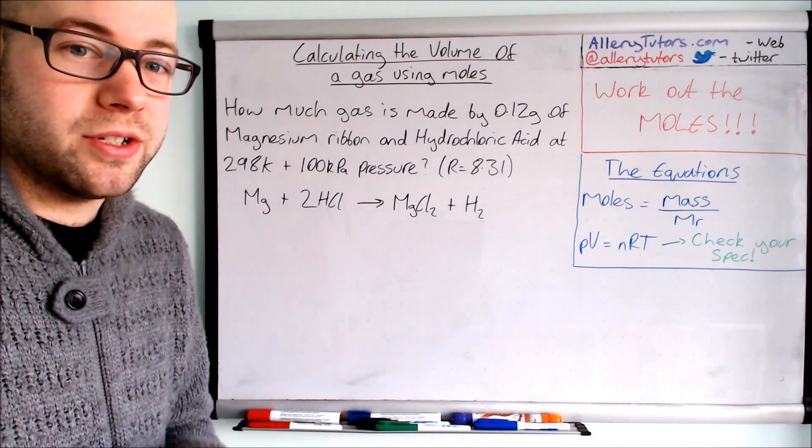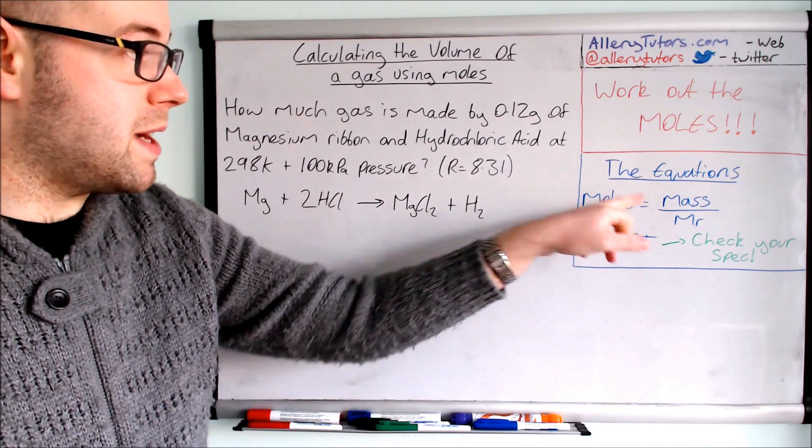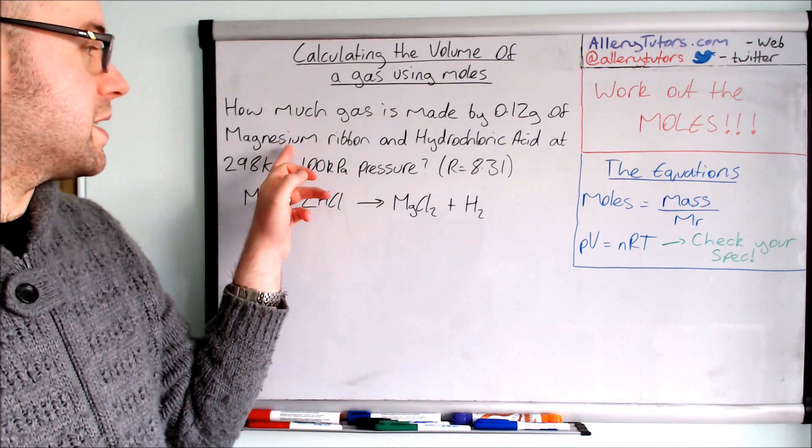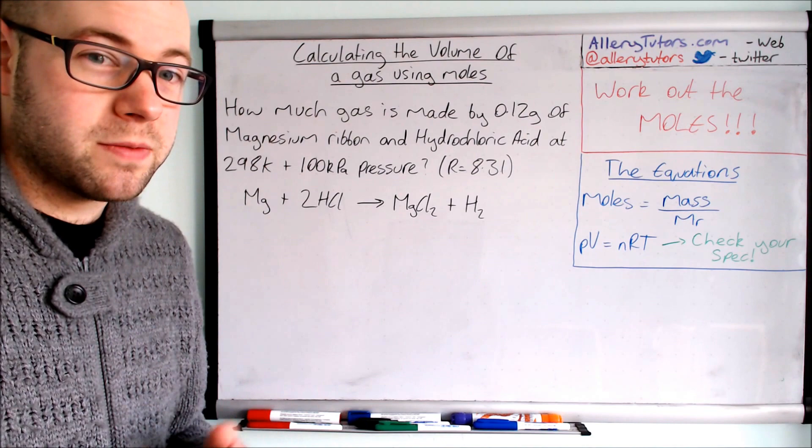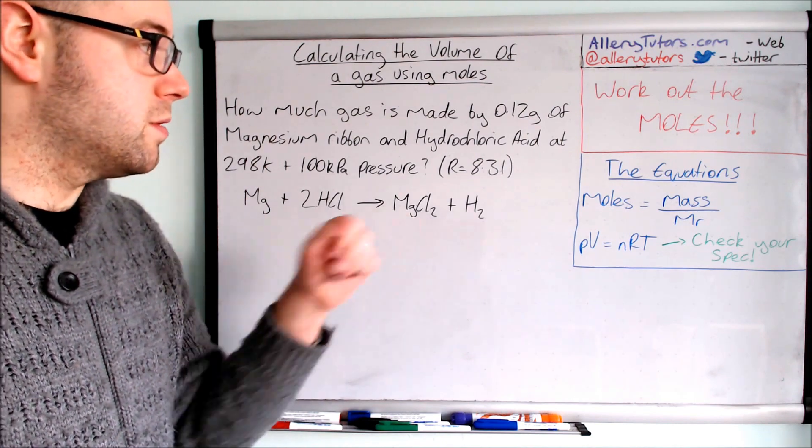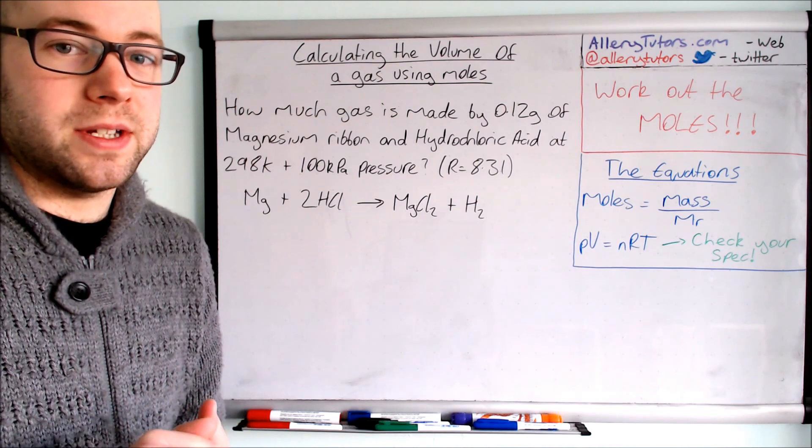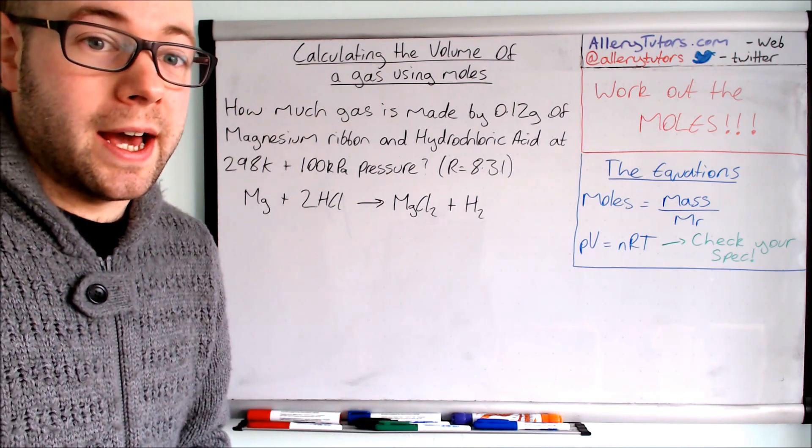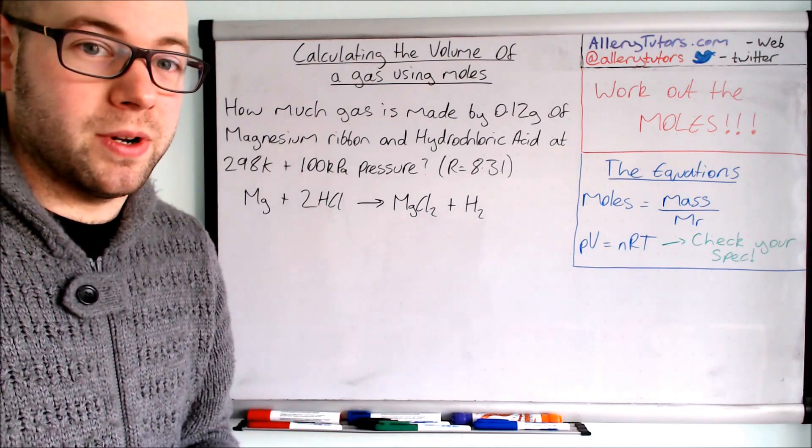So that's what we're going to do. We're actually going to work out the number of moles. So we can work out the moles by using mass over MR and you can see here that we've got a mass of magnesium and obviously we know the MR of magnesium because you'll have a periodic table. And once we know the moles of magnesium we can then work out the number of moles of our gas that we're trying to work out, which is our hydrogen gas. And since we know the number of moles of that we can then use our ideal gas to work out the volume.